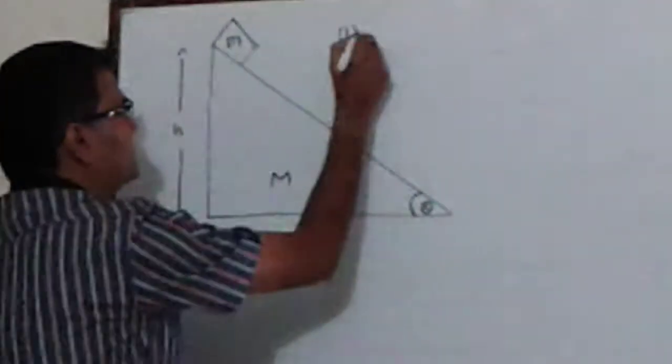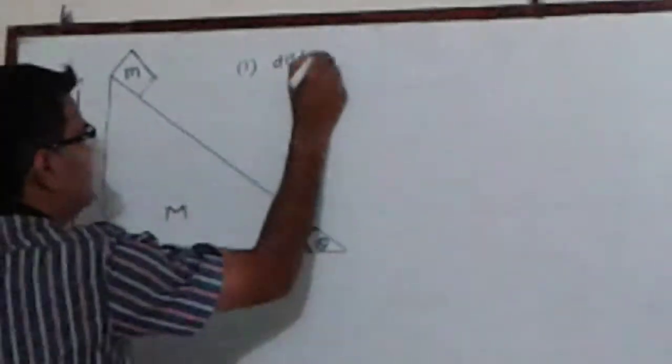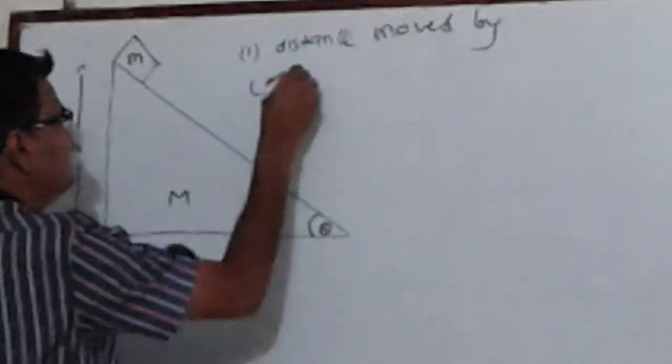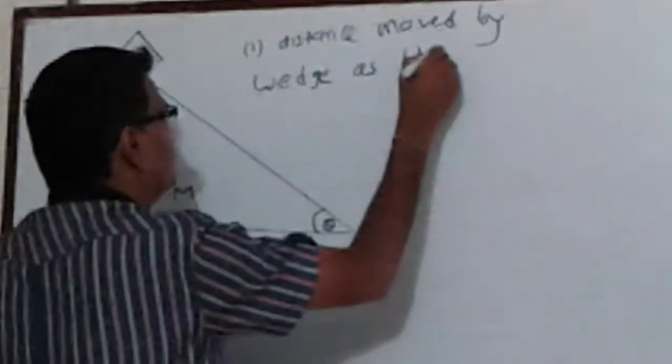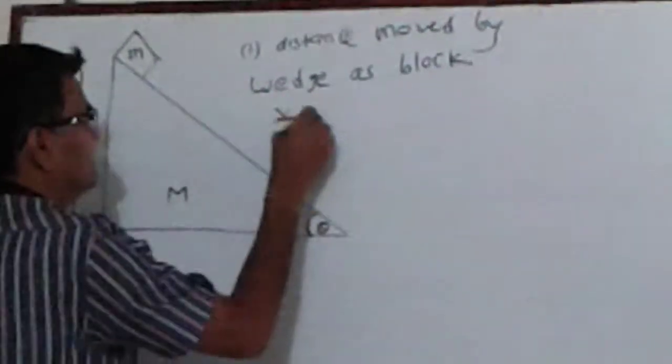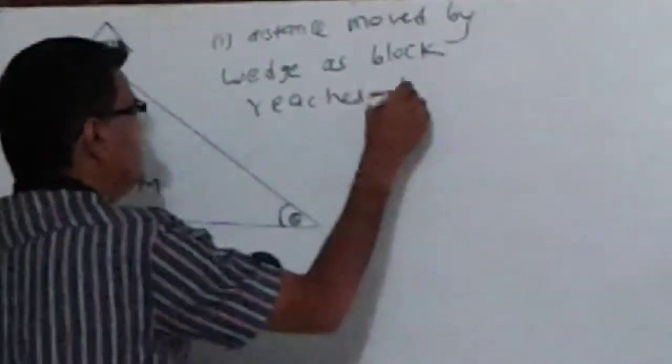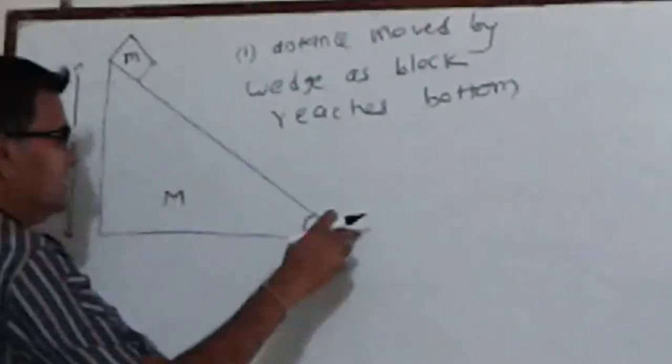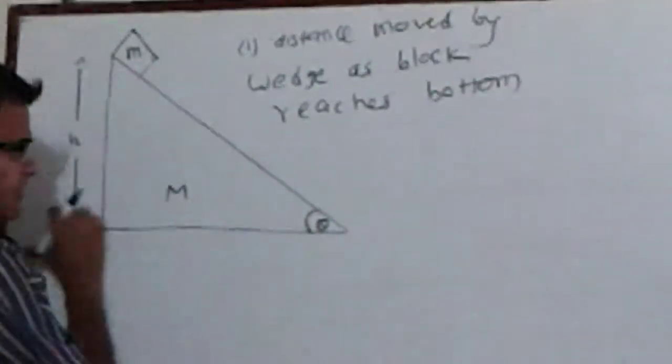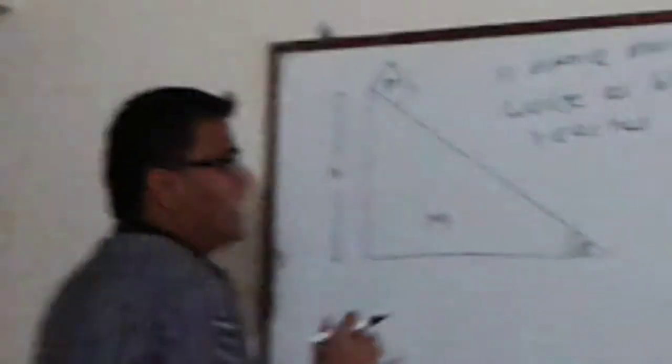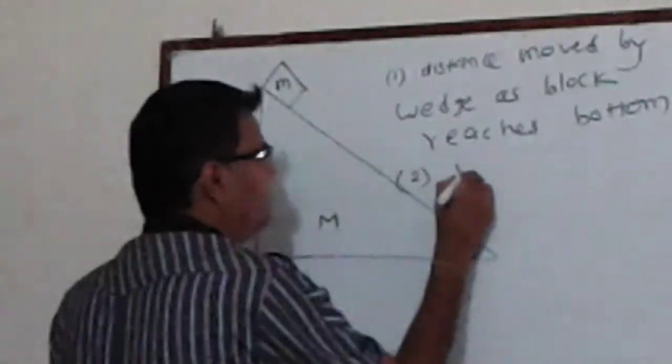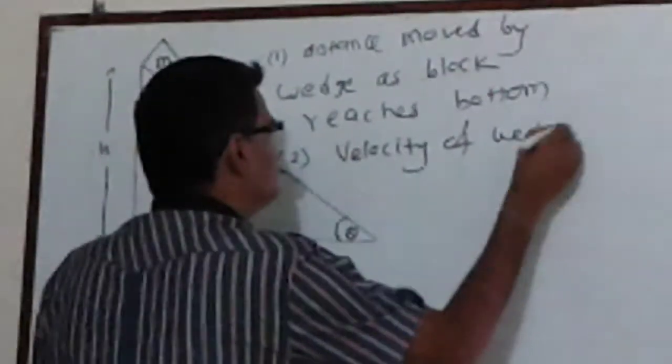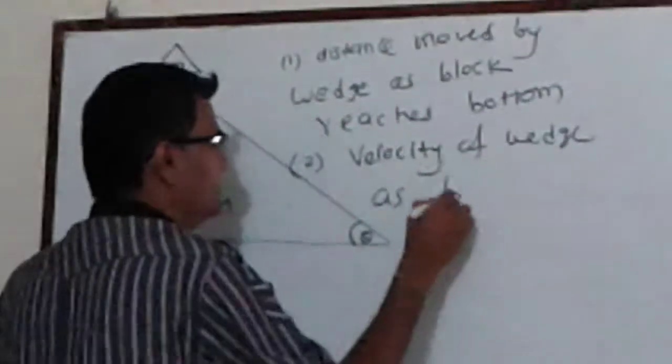We are supposed to find, number one, the distance moved by the wedge as the block reaches bottom. That is, when the block comes from here to here, how much distance will be moved by the wedge? Obviously it will move to the left. Number two, we have to find the velocity of wedge as the block reaches bottom.